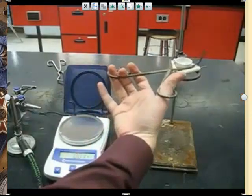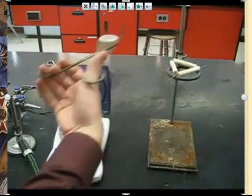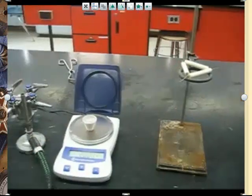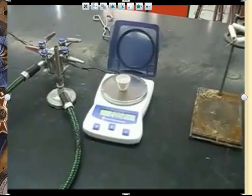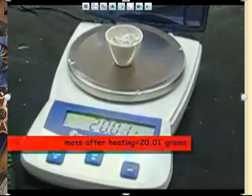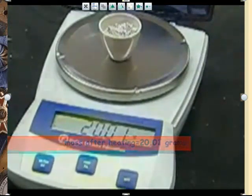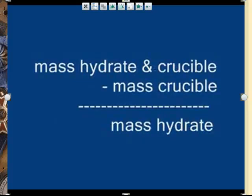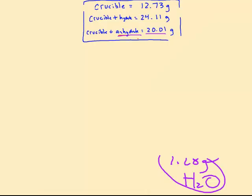So then once we let it cool, we can pick it up again with our hand, put it on the balance. So now the next mass we need then is what happened? Well, the water was heated away, and now we have 20.01 grams. So now we have all the information we need to solve the math.